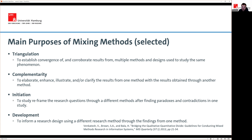A third distinct purpose is initiation — you do one study and find a paradox, contradiction, or something unexpected that becomes the basis for a subsequent study. For example, you carry out an experiment and get a completely unexpected finding — you expected one thing and got the exact opposite — and you have no idea why. You then carry out an exploratory qualitative study, perhaps a field study, to figure out why you got those results. This is initiation: we are reframing the research question based on something contradictory or paradoxical.